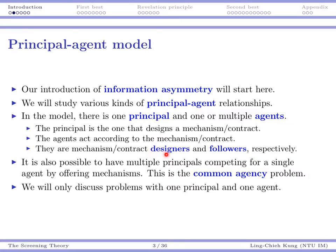Sometimes we also call them the mechanism designer and followers — the principal is the designer and the agent is the follower. For example, in supply chains, a company may be the principal and its employees are agents; an upstream manufacturer may be the principal and the downstream retailer is the agent. We study principal-agent relationships, in particular when there is information asymmetry between the principal and agent.